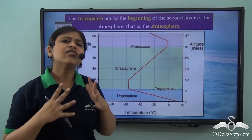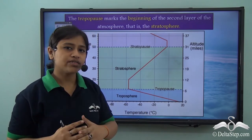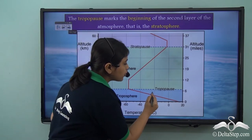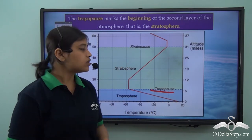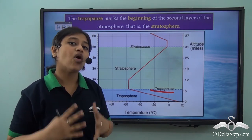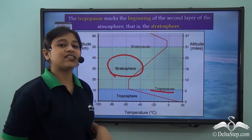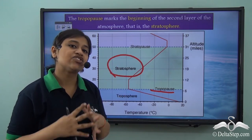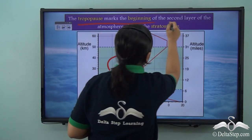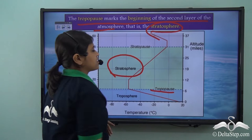Now that we have learnt about the first layer, we know that the boundary or the end of the first layer is marked by the tropopause. This tropopause, while it marks the end of the first layer, also marks the beginning of the second layer — the stratosphere.